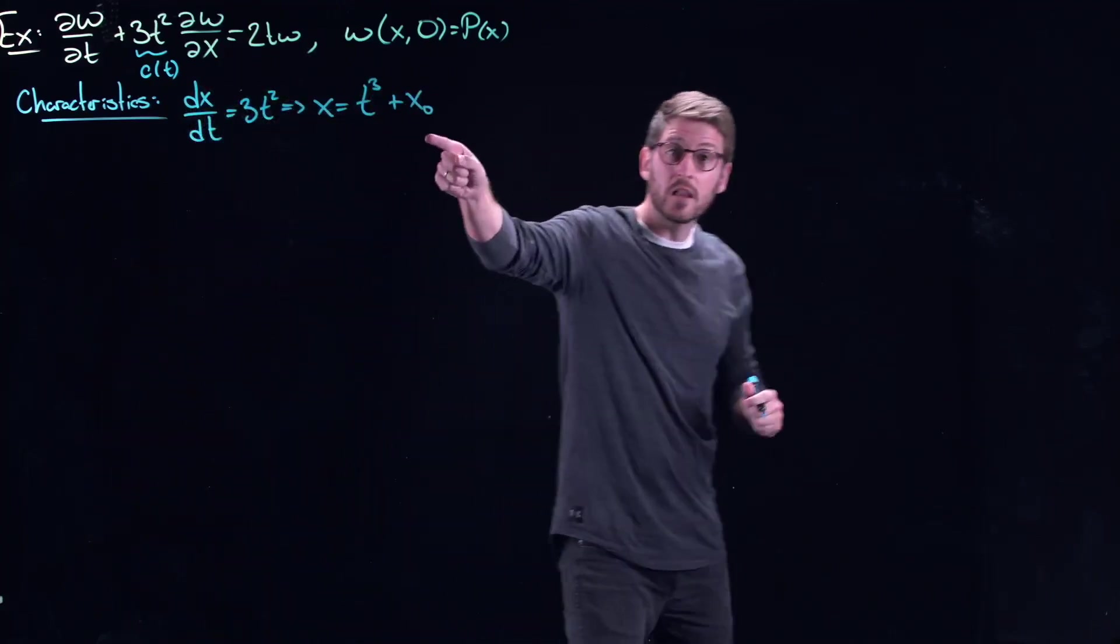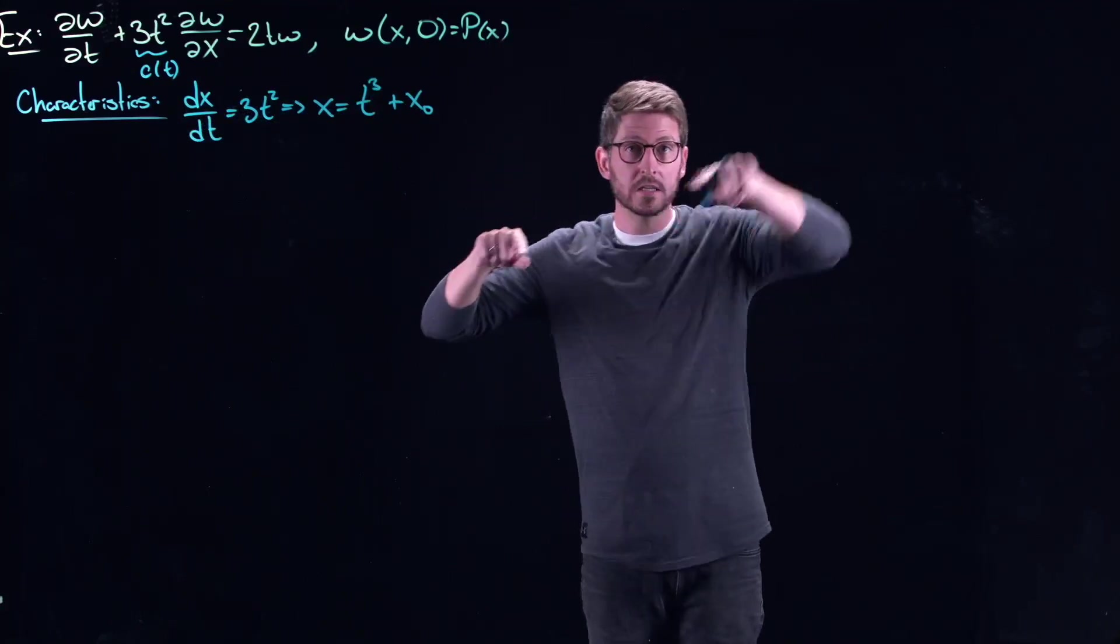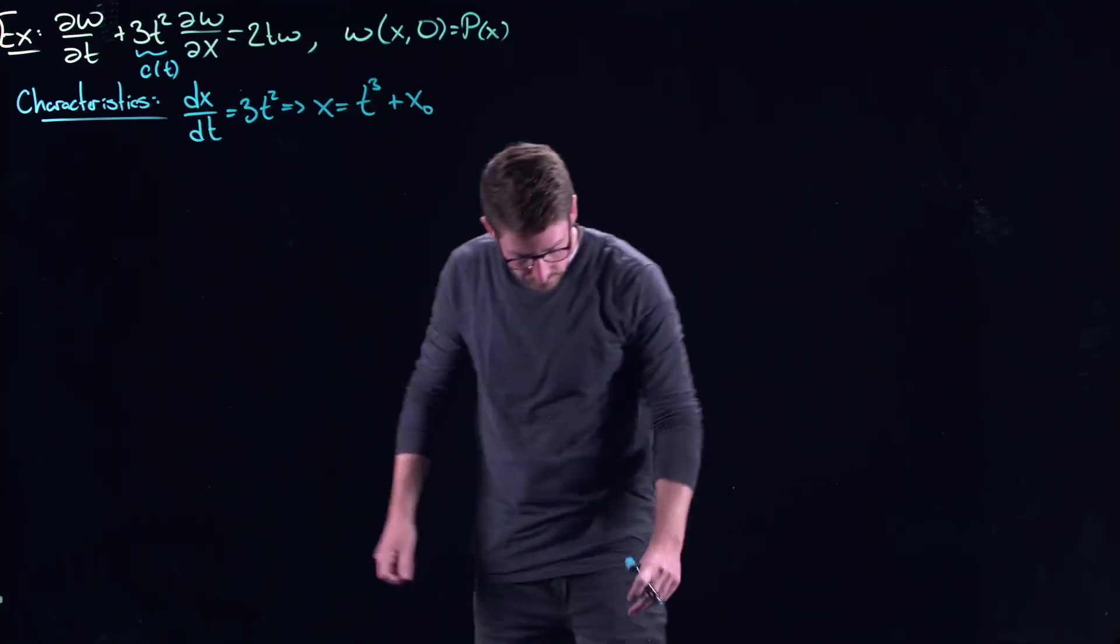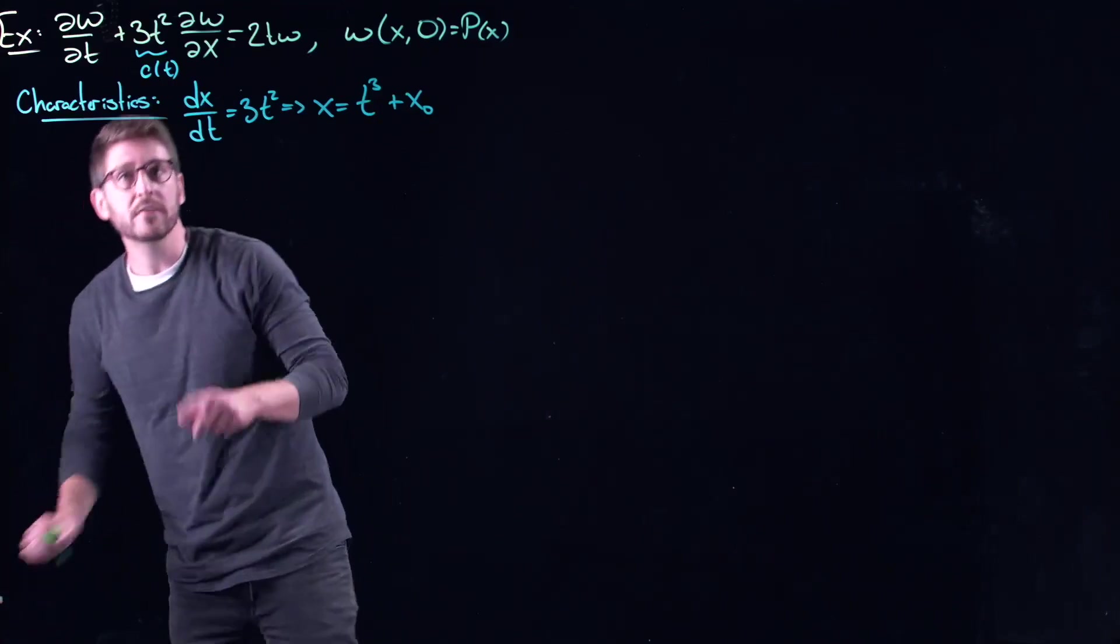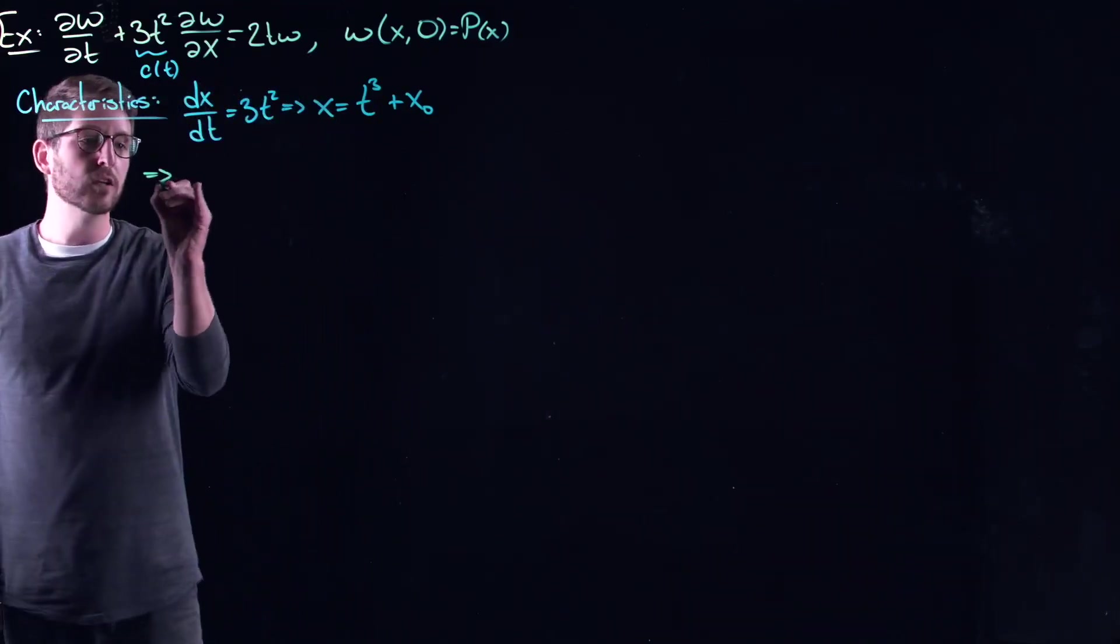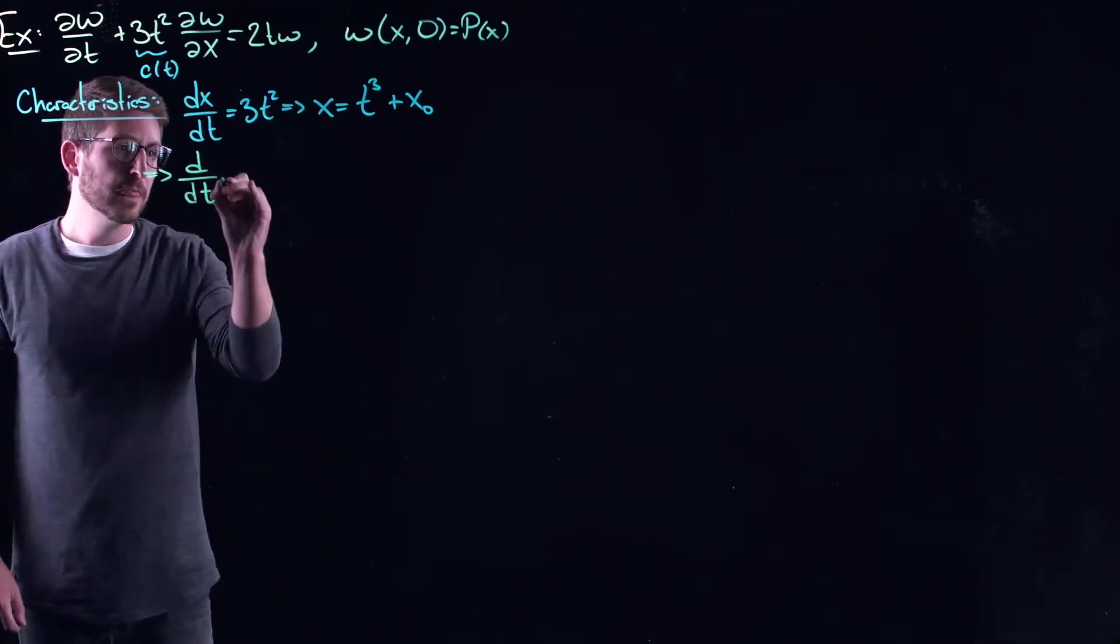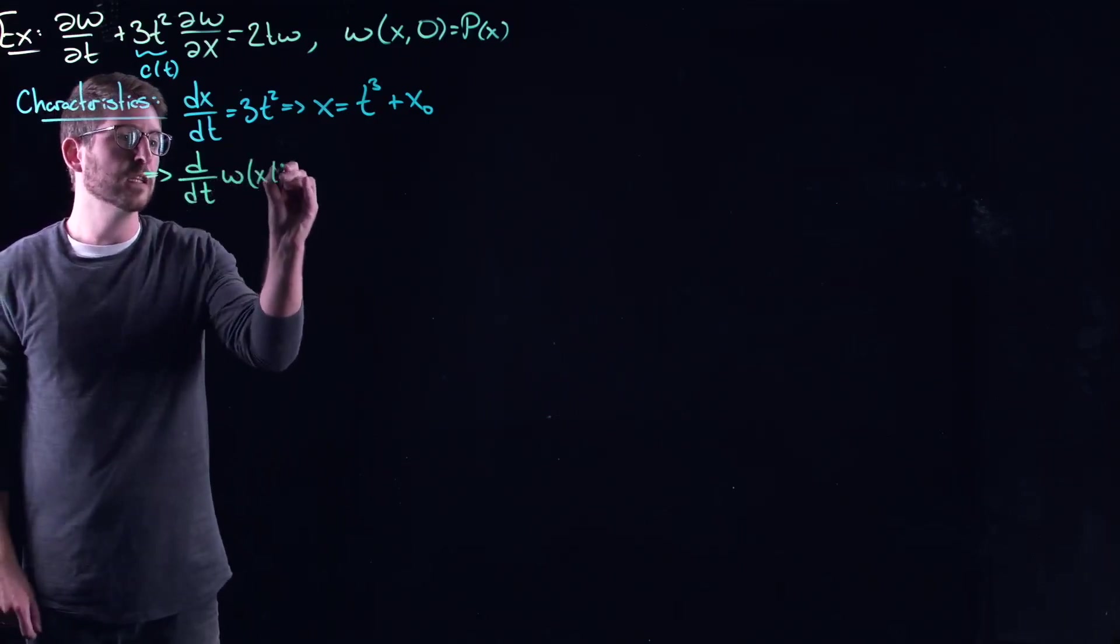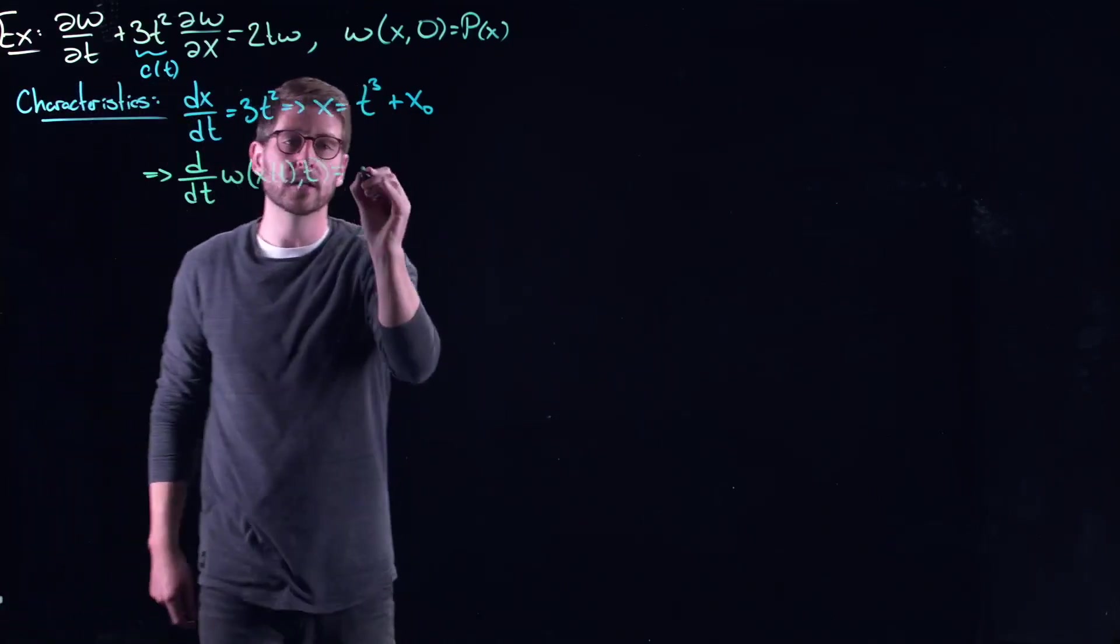So now look at these things. These are not lines. If you take your space and time, these things are nice little cubic curves. And the last piece of this, if you have this assumption of the characteristics, this will tell you that d/dt of w of x of t, comma t has to equal this piece right here now.